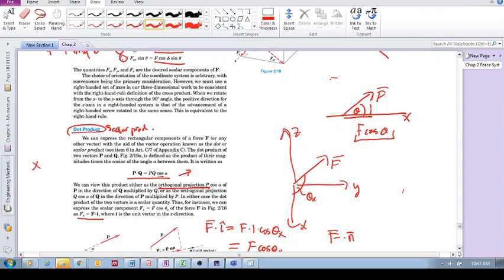But remember, it is a scalar product. This gives you only a number, a scalar value. It gives you no directional information. P dot Q does not give you a vector, it gives you a scalar number.